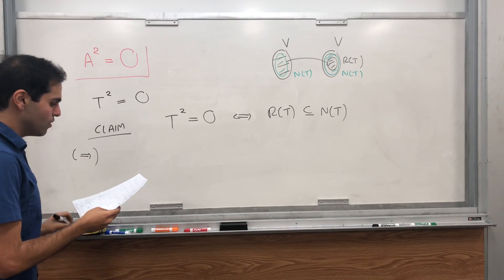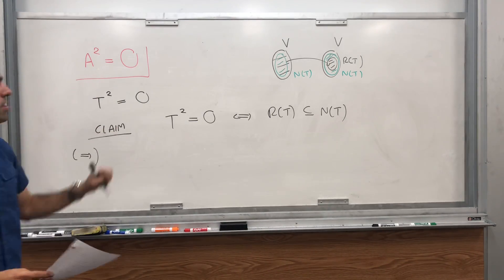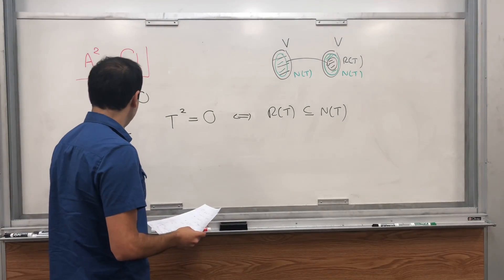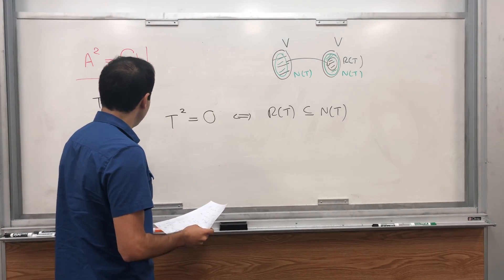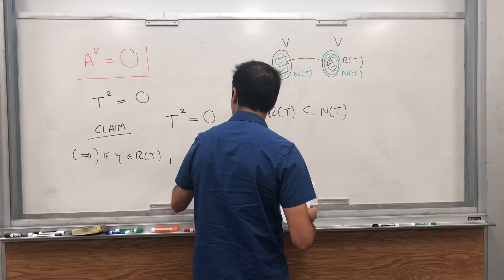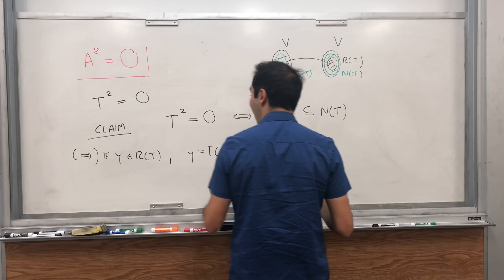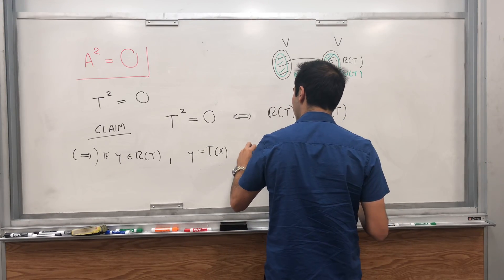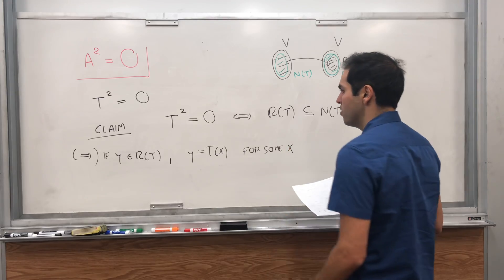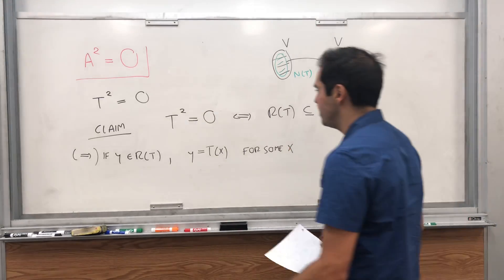So it's a very cute proof. So first of all, suppose T squared is the zero matrix, and let Y be in the range. So if Y is an arbitrary element of the range of T, then we know by definition of the range that Y equals T of X for some X.